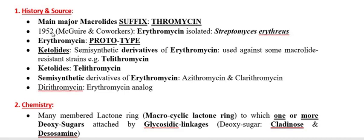Erythromycin was isolated in the year 1952 by scientist McGuire and co-workers. Thereafter, other antimicrobial agents came into existence and most of them are semi-synthetic in nature. Because most of the antimicrobial agents are derived from erythromycin, they are called semi-synthetic derivatives of erythromycin.